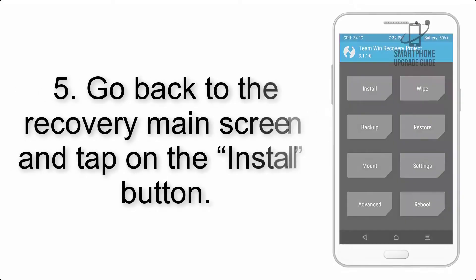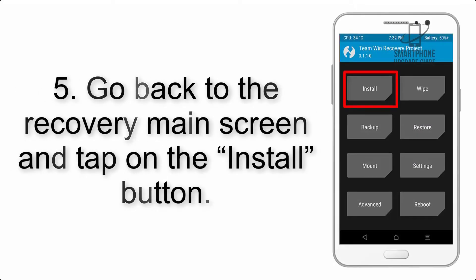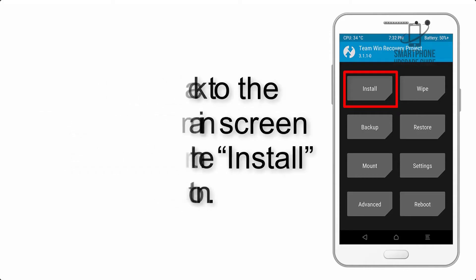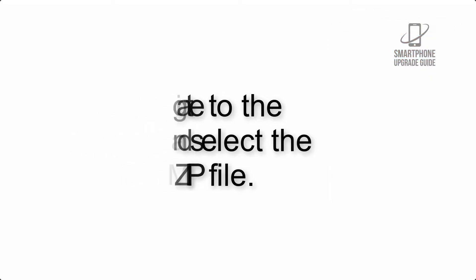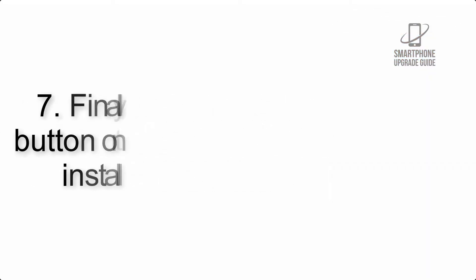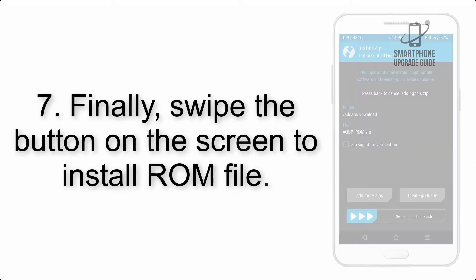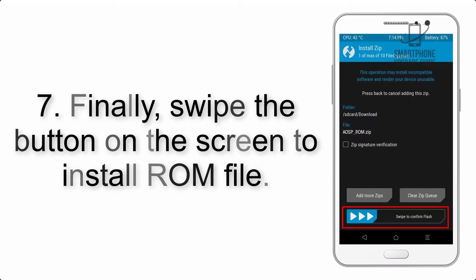Step 4: Swipe the button to wipe the device. Step 5: Go back to the recovery main screen and tap on the Install button. Step 6: Navigate to the storage and select the ROM zip file.